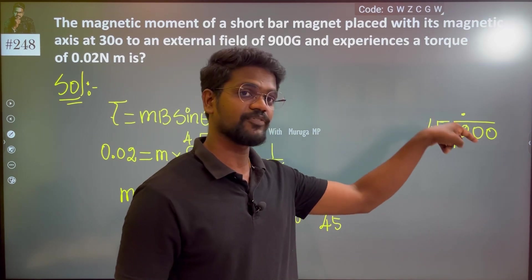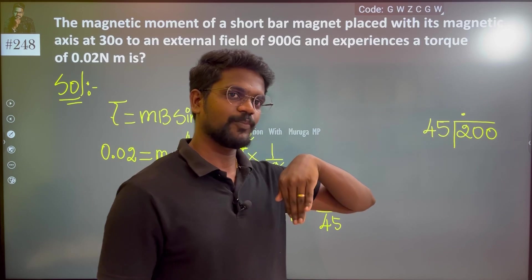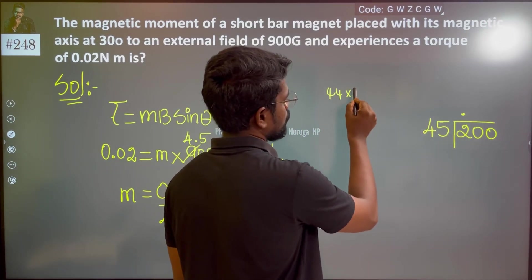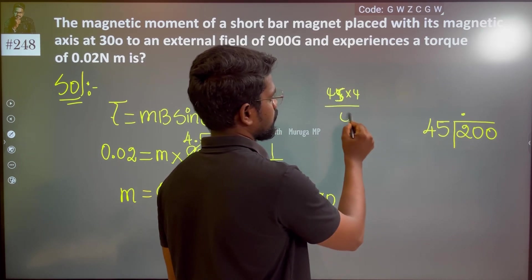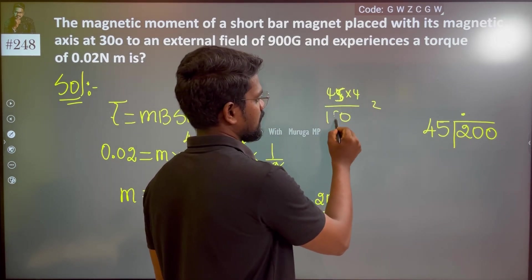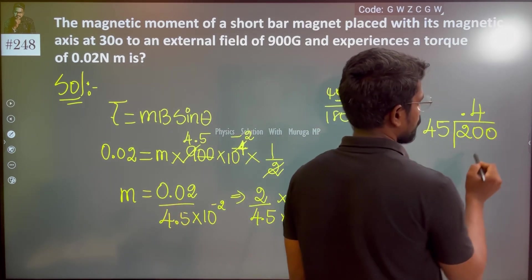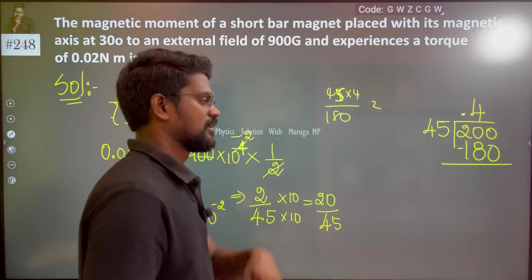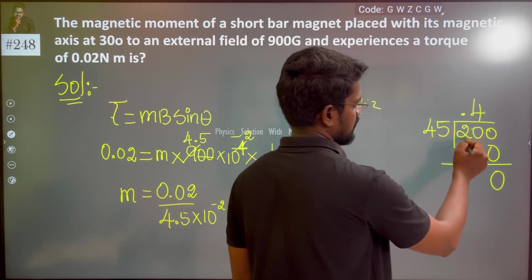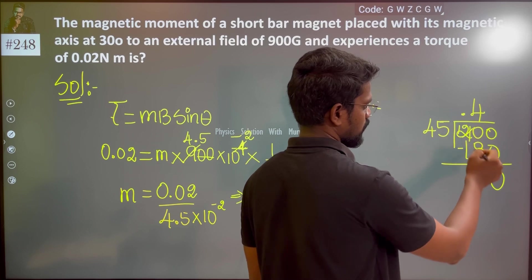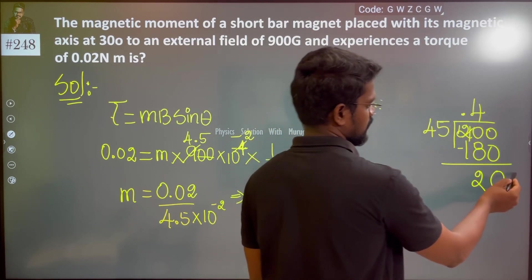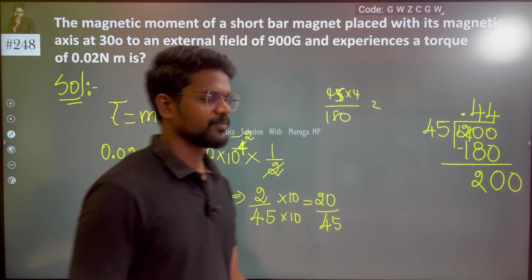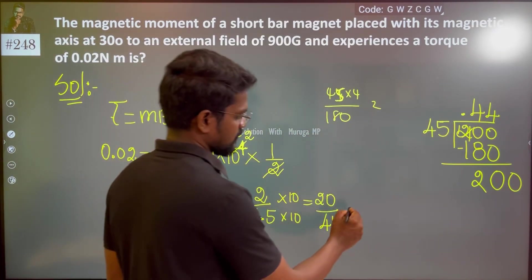45 into 4 is 180. When we subtract, this becomes 20. We already have a decimal, so we write 0 and bring down 0, making it 200 again. 45 into 4 again.